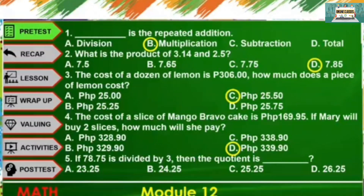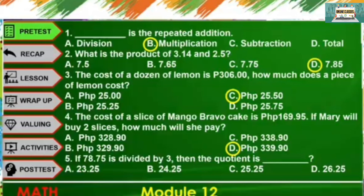Last question: If 78 and 75 hundredths is divided by 3, then the quotient is A. 23 and 25 hundredths, B. 24 and 25 hundredths, C. 25 and 25 hundredths, or D. 26 and 25 hundredths. The correct answer is D, 26 and 25 hundredths.